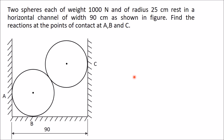Today I will explain a problem of rigid bodies in equilibrium. In this problem, two spheres each of weight 1000 Newton and of radius 25 centimeter rest in a horizontal channel of width 90 centimeter as shown in the figure. Find the reactions at the points of contact at A, B, and C.